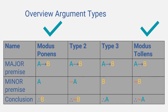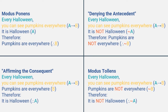Examples 2 and 3 do not have a valid form. Again, this does not mean that the conclusion is false — it just means that it is not supported by a valid argument. These two logical fallacies are commonly referred to as denying the antecedent and affirming the consequent.